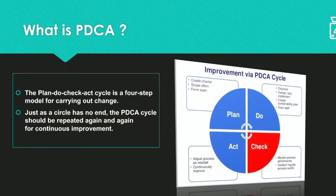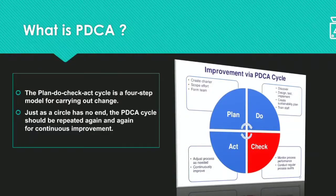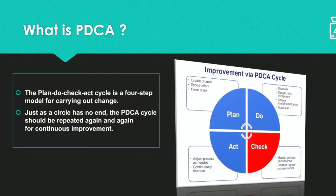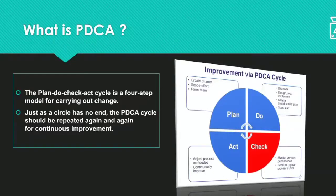So instead of Plan Do Check Act, it is also known as the Plan Do Study Act cycle. It was made popular by W. Edwards Deming, who is considered by many to be the father of modern quality control. However, he always referred to it as the Shewhart cycle. Later in Deming's career, he modified the PDCA cycle to Plan Do Study Act because he felt that 'check' implies inspection or analysis.